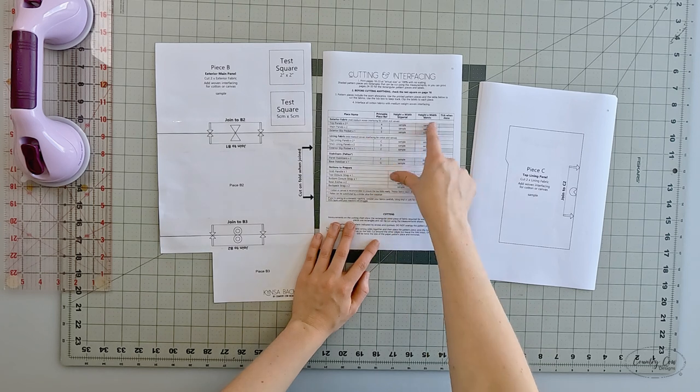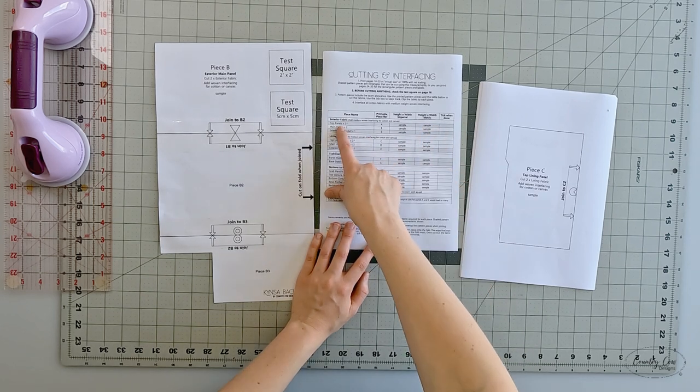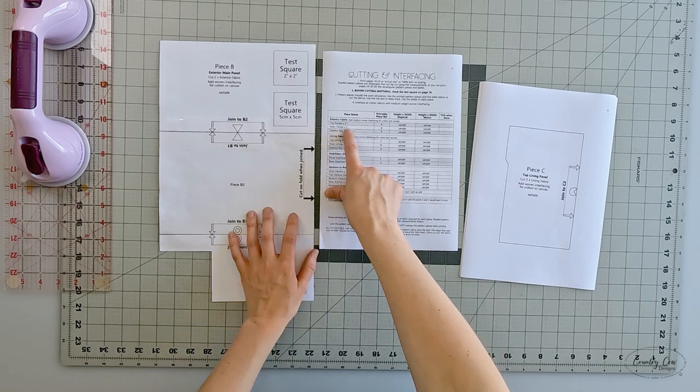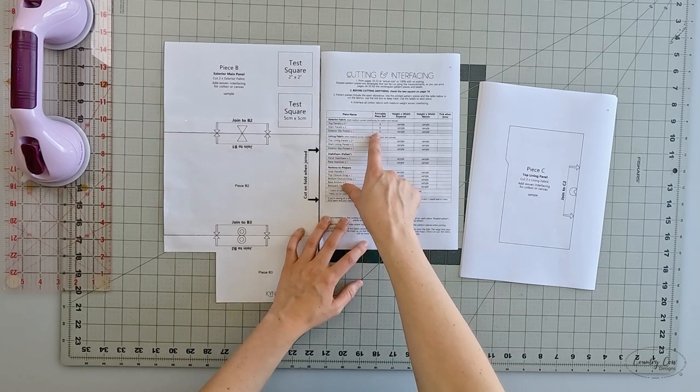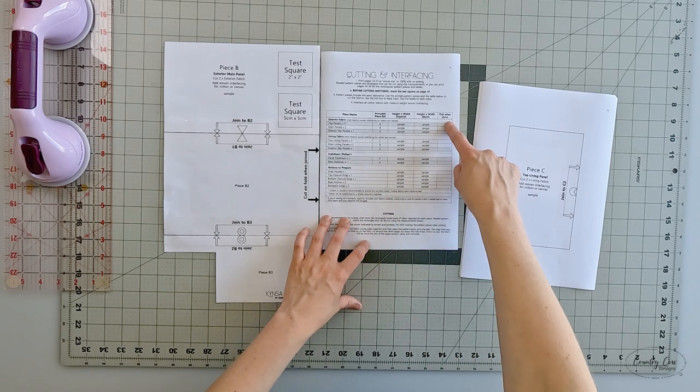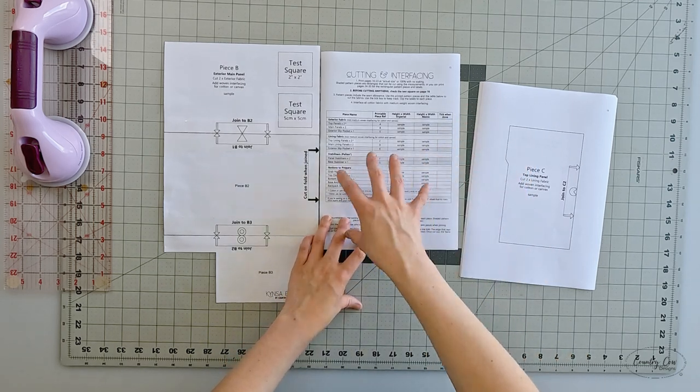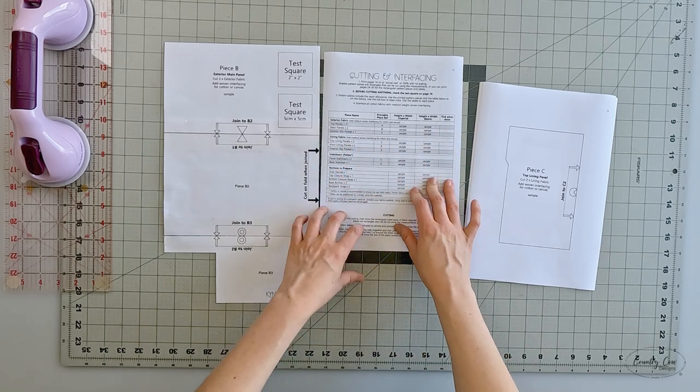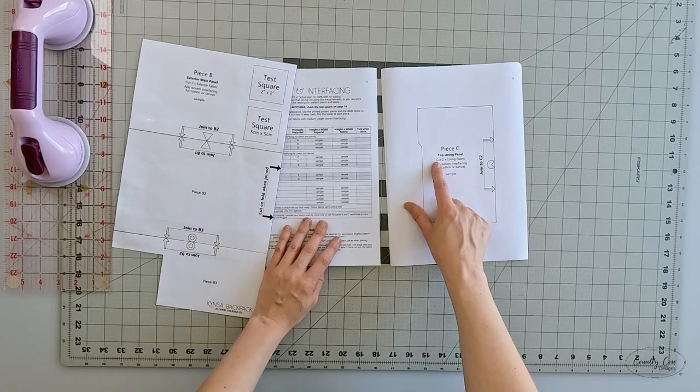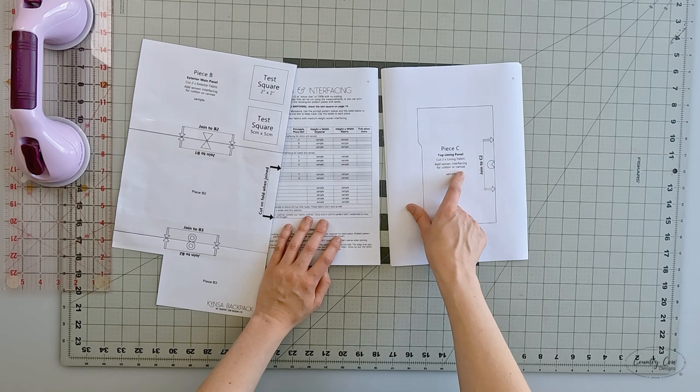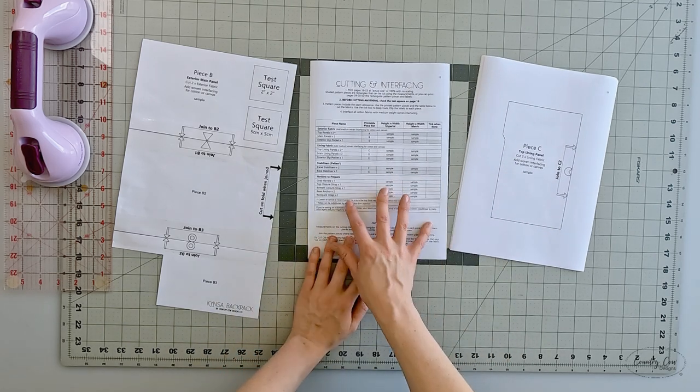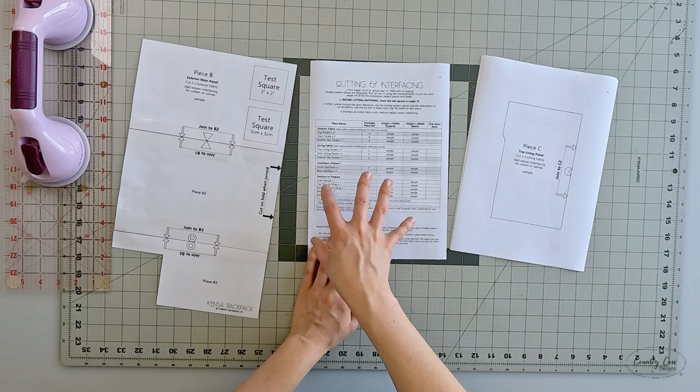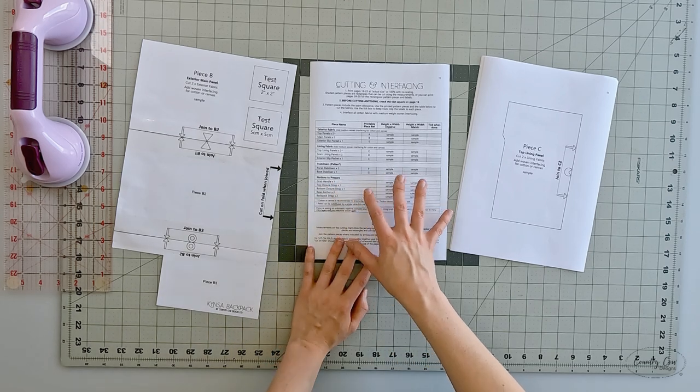Once all of your pattern pieces are assembled, it's a lot easier to use the cutting chart as you go. You can see this tells us that we need two, so we've got exterior fabric first. You can work your way through each pattern piece and then tick it off after you've cut them out of your fabrics. It's just a really good way of making sure that you don't lose track. It does also mention on each pattern piece what you're cutting out, but for me this is definitely my preferred method.